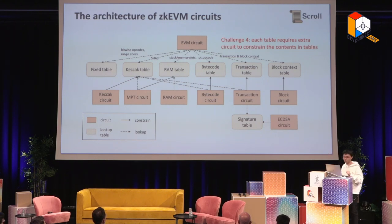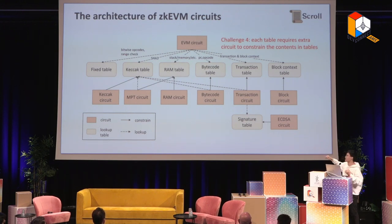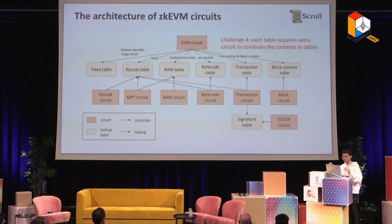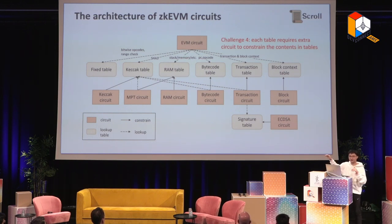For the RAM table, because you are proving for stack, memory, and storage, you need a Merkle Patricia Tree for the storage part. You have an MPT circuit that constrains that the RAM table is generated correctly. In that MPT circuit, you again need Keccak, so you look up the Keccak table again. That's basically how you constrain everything — for each table, you have some independent circuit constraining that the table is generated correctly. For example, for transactions, you have a signature table and an ECDSA circuit to constrain it. That's the architecture of ZK EVM at a high level.